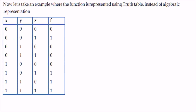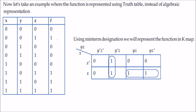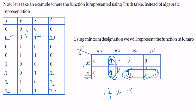Using a truth table example for function F with 1s at x-dash y-dash z, x y-dash z, x y z-dash, and x y z: place 1s at those positions. Combine: the first two (x changing, y-dash and z constant) give y-dash z; the second two (x constant, y changing, z-dash constant — wait, here x and y are the constant pair for xyz and xyz-dash) give xy. Final answer: y-dash z plus x y.